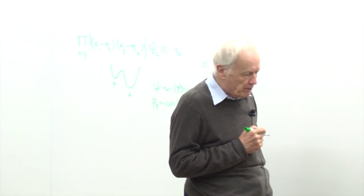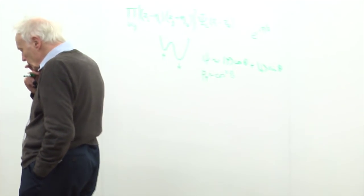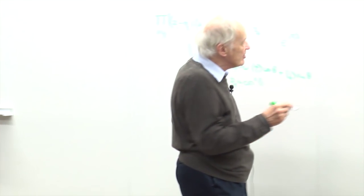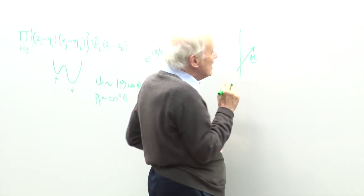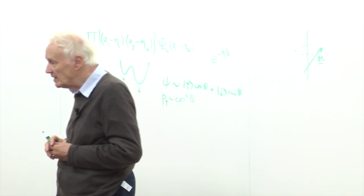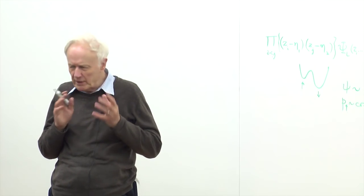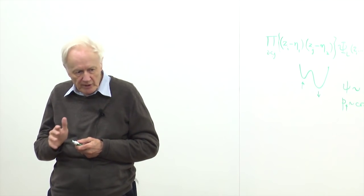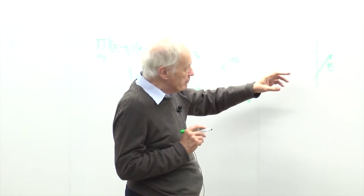The Berry phase: imagine a particle in a quantum state depending on some external parameter λ. A standard example is a spin-1/2 in a magnetic field, where the direction of the magnetic field is rotated around the z-axis. When you come back to yourself, you pick up a dynamical phase e^(−iEt/ħ) which you can discard, but you may also pick up an extra phase — the so-called Berry or Pancharatnam-Berry phase. The Berry phase φ_B equals the integral of ⟨ψ(λ)|∂ψ(λ)/∂λ⟩ dλ.